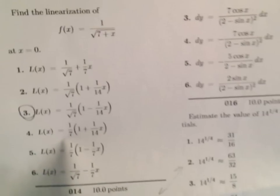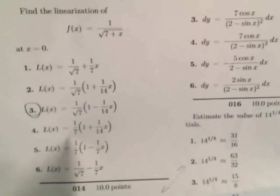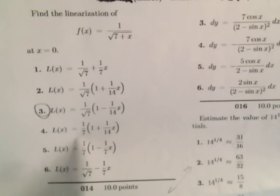Okay, in this one it says find the linearization of f of x equals 1 over the square root of 7 plus x at x equals 0.